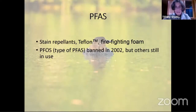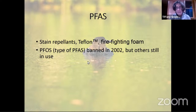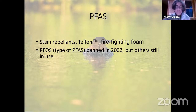Let's jump into the results, starting with PFAS — one of the emerging contaminants found in stain repellents, Teflon, and firefighting foam. One type called PFOS has been one of the more dominant types of PFAS in wildlife. It was banned in 2002, but of course it is a persistent chemical. You may have heard PFAS referred to in the media as 'forever chemicals' — and pretty much everything we're talking about tonight qualifies. Other types of PFAS are still in use.